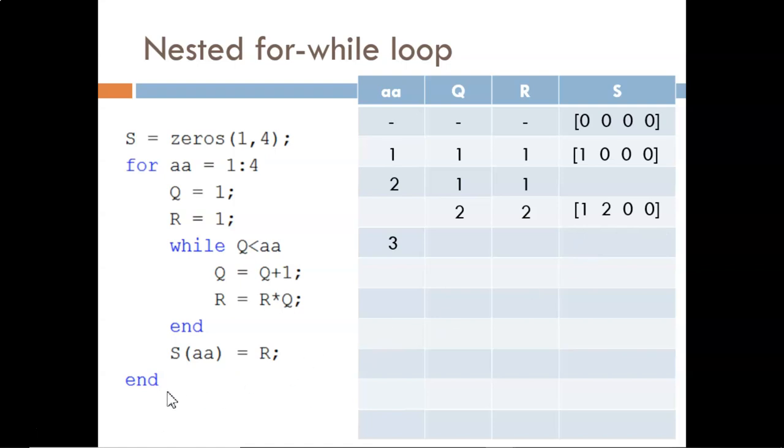We loop back to the for statement, update AA to 3, and reset Q and R to 1. The while loop has two iterations before the condition becomes false. At this point, R equals 6, and that gets assigned to the third index of S.